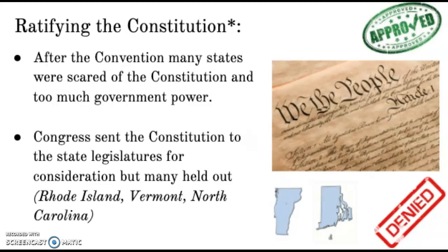It was like: we worked really hard on creating this Constitution. However, Rhode Island, Vermont, and North Carolina said no — they didn't want to pass it. So what was the option? What should they do?